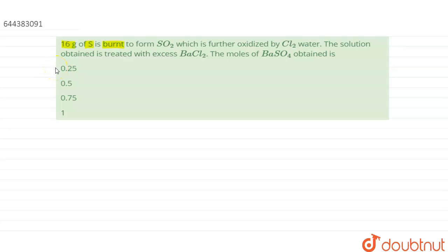16 gram of sulfur is burnt to form SO2, which is further oxidized by chlorine water. The solution obtained is treated with excess of BaCl2. The moles of BaSO4 obtained is what we have to find out. So the reaction for the process is sulfur plus oxygen.